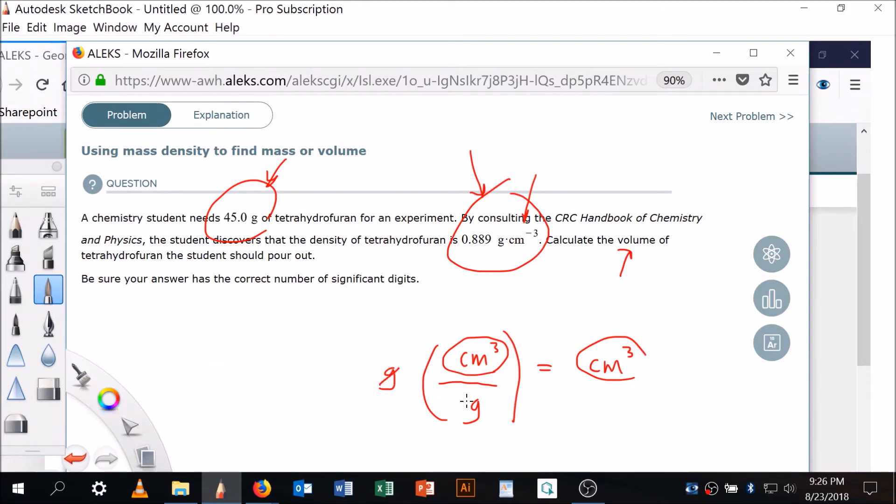Okay, now that I've got that I'm set. You see my grams are going to cross off. Can you see that? Now let's put the numbers in and we'll be done. So the numbers are 45.0 and here the numbers are 0.889 grams per one cubic centimeter.